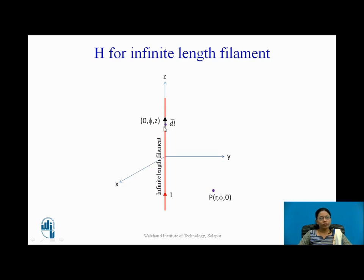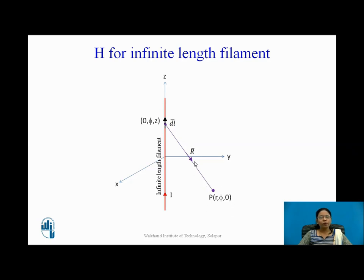Let us join this point with the point P. After joining these two points, I put the arrow head towards point P, because I need to find the field at point P — where we want to find the field, the arrow head should point there. The distance is denoted as R bar.